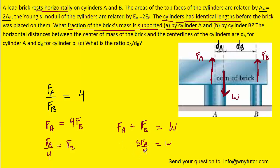We'll combine like terms, multiply both sides by 4 fifths, and then divide both sides by W to get the ratio we seek. The fraction of the brick's mass that's supported by cylinder A equals 4 fifths, or in decimal form, 0.80. That's the correct answer to part A.